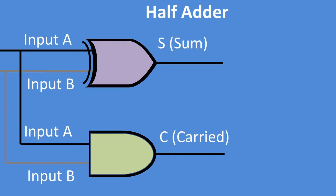The half adder consists of an A and B input tied to an exclusive OR, with the output being an S or sum bit. The A and B inputs are also connected to an AND gate, which outputs a C or carry bit.